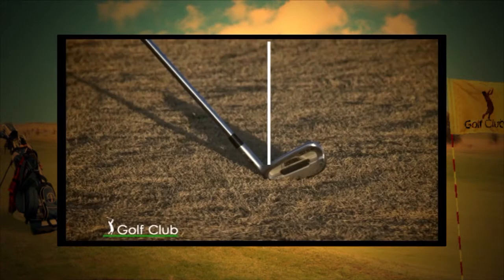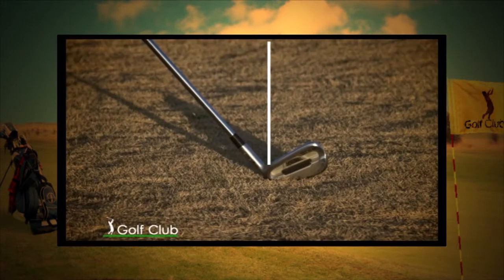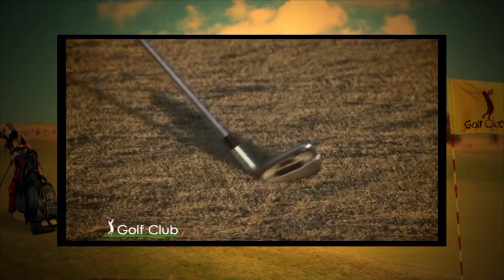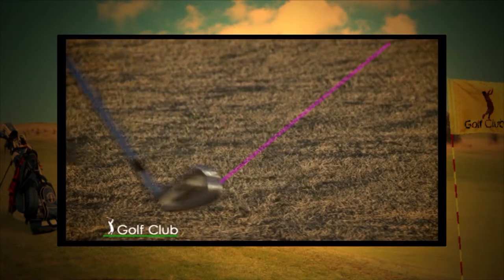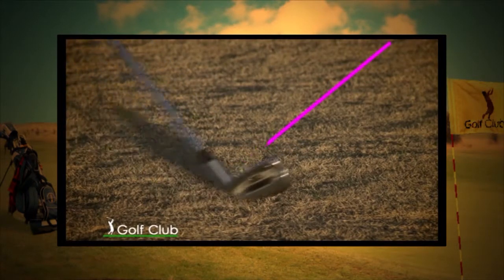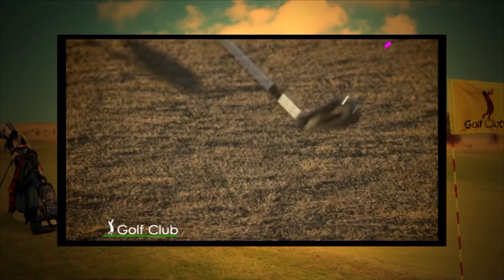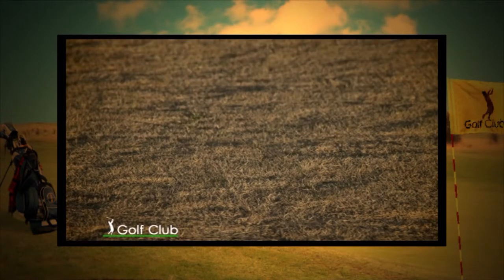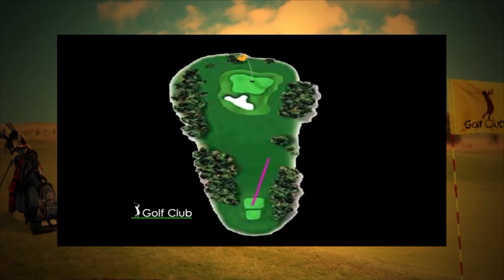El golpe de push o empujado es aquel en donde la cara del palo en el momento del impacto se bloquea apuntando hacia la derecha. Es un golpe recto que realiza un vuelo derecho hacia la derecha del objetivo.